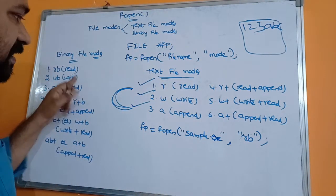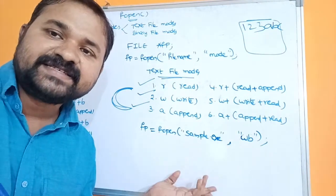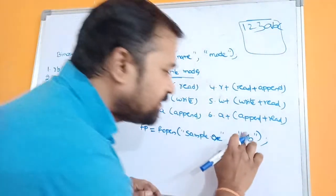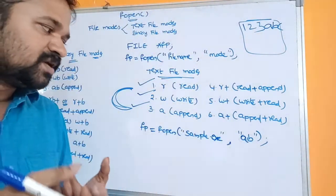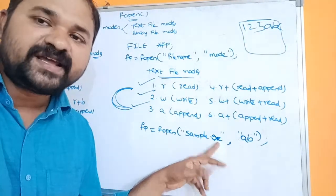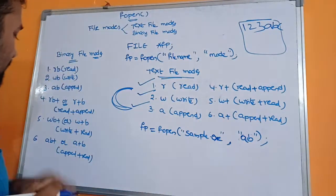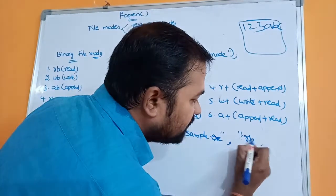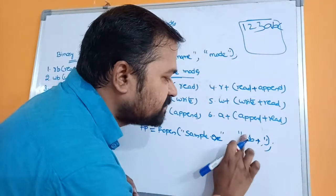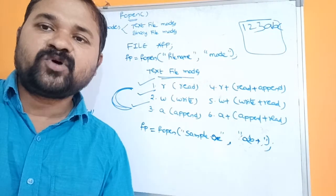wb is similar to write mode — it opens a binary file for writing. If the file doesn't exist, a new file is created; if it already exists, its contents will be overwritten. ab mode opens a binary file for appending data to the end. If the file doesn't exist, a new file is created; if it exists, new content is appended. rb+ means read and append, wb+ means write and read, ab+ means append and read on binary files.